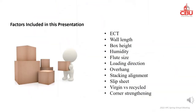Factors affecting stacking strength of corrugated boxes discussed in this presentation include ECT, Wall Length, Box Height, Humidity, Flute Size, Loading Direction, Overhang, Stacking Alignment, Slip Sheet, Recycled Materials, and Corner Strengthening.